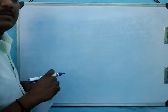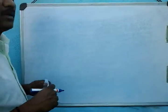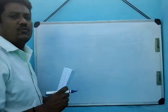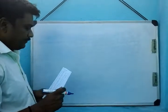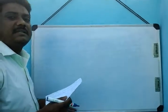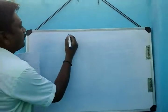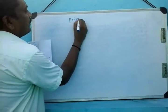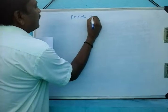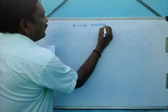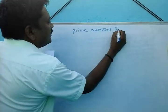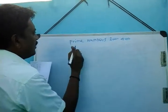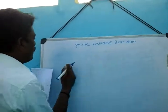Hi students, now we are going to see how many prime numbers are between 300 to 400.